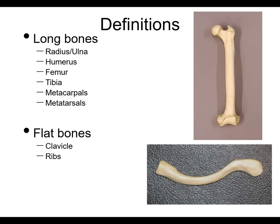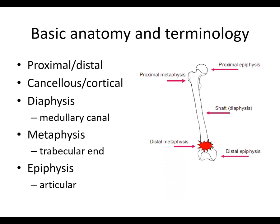Basic definitions — hopefully this is a little bit of review in the next few slides. We'll talk about long bones and flat bones. Some examples of long bones are shown here: the radius and ulna, the humerus, femur, tibia, metatarsals, and metacarpals. Flat bones include the clavicle and ribs. How these bones form embryologically and as we grow differs, as we'll get to.